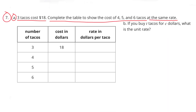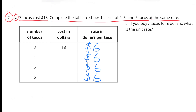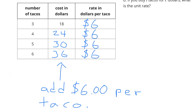Number 7A. Three tacos cost $18. Complete the table to show the cost of 4, 5, and 6 tacos at the same rate. The rate in dollars per taco is $6, found by dividing $18 ÷ 3 = 6. Applying that same rate, the cost in dollars increases by $6 each time: 18 + 6 = 24, 24 + 6 = 30, and 30 + 6 = 36.